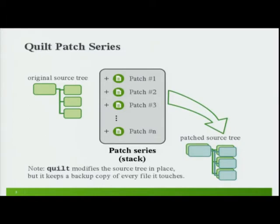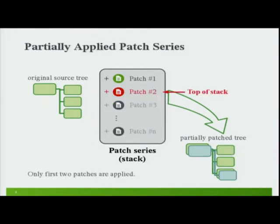It's worth noting that Quilt modifies the source tree in place. But don't be afraid — it keeps a backup copy of every file it touches for every patch that touches that file. So you can always roll back and revert to exactly the original state by just unapplying every patch. You can also navigate through the patch series, so the top of the stack is not necessarily the end of the series — you can stop at any point.